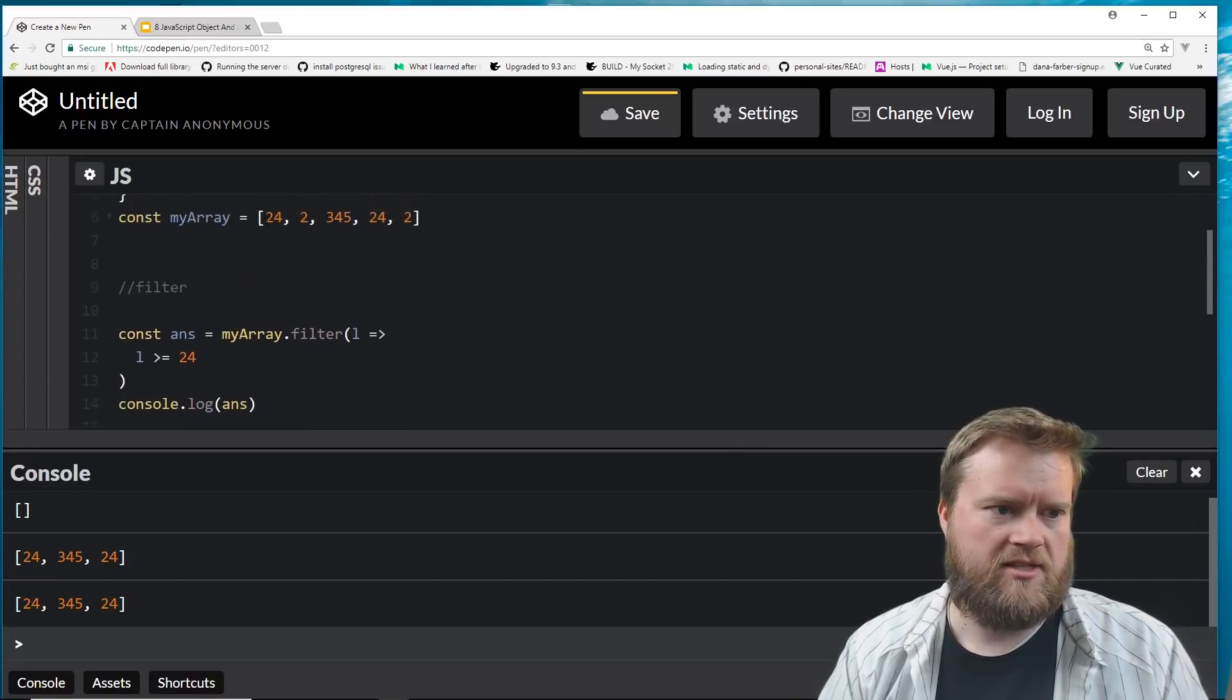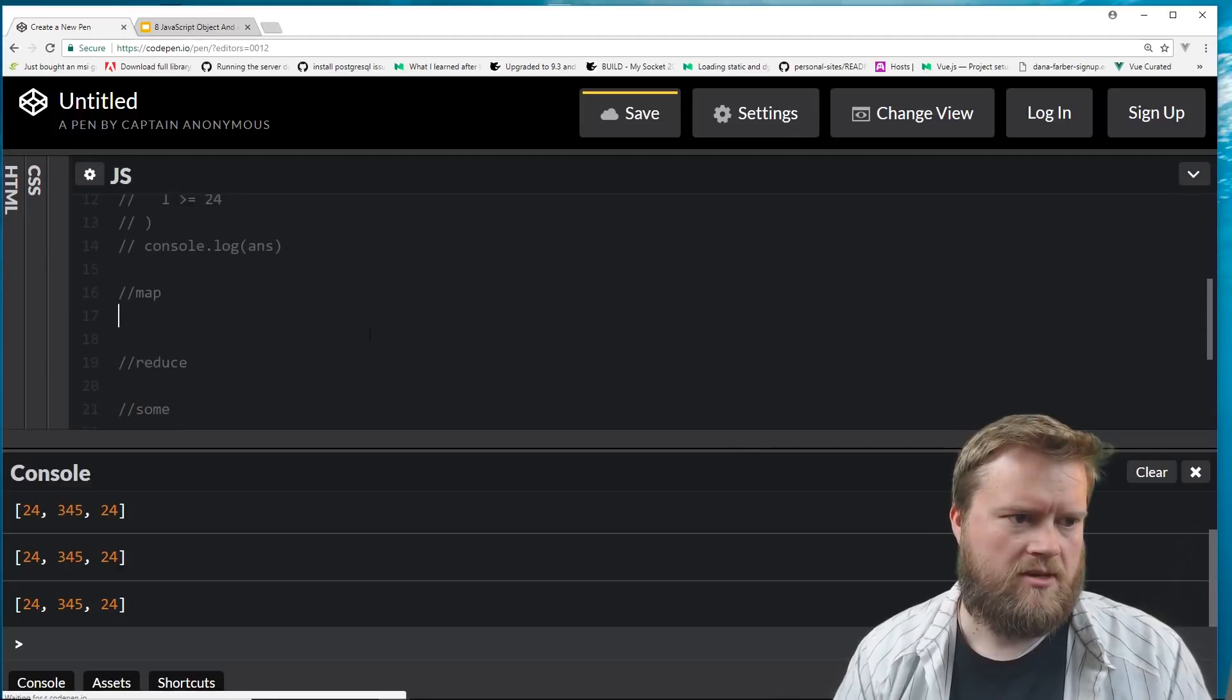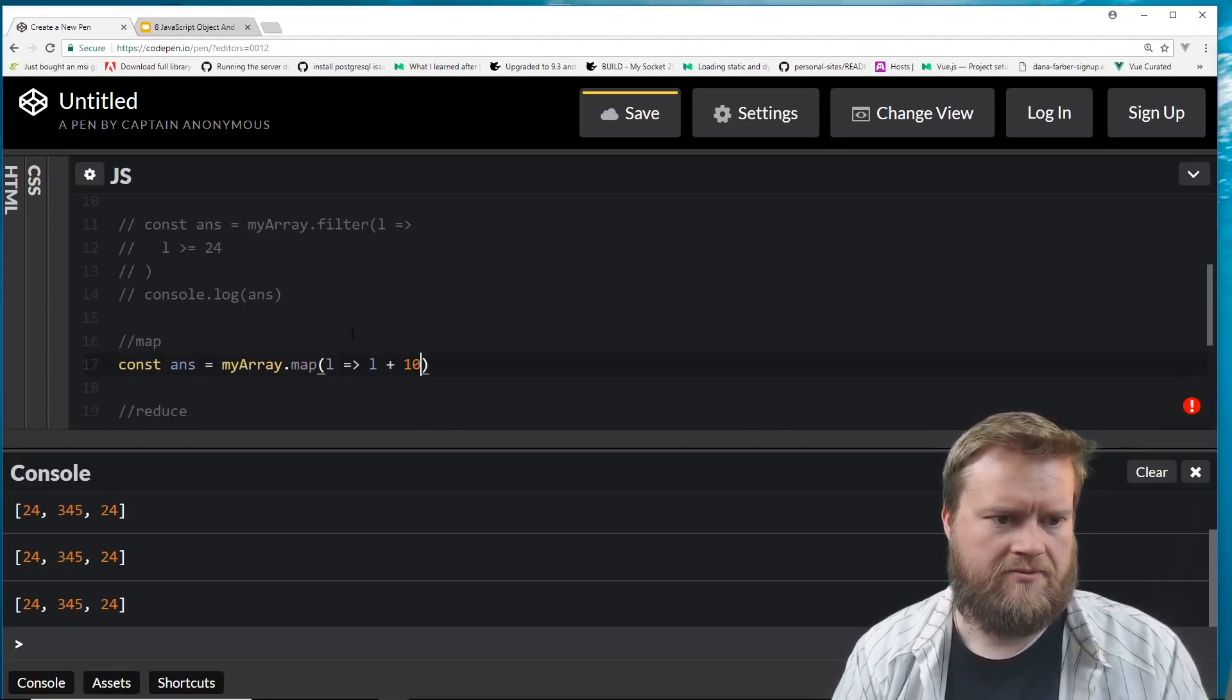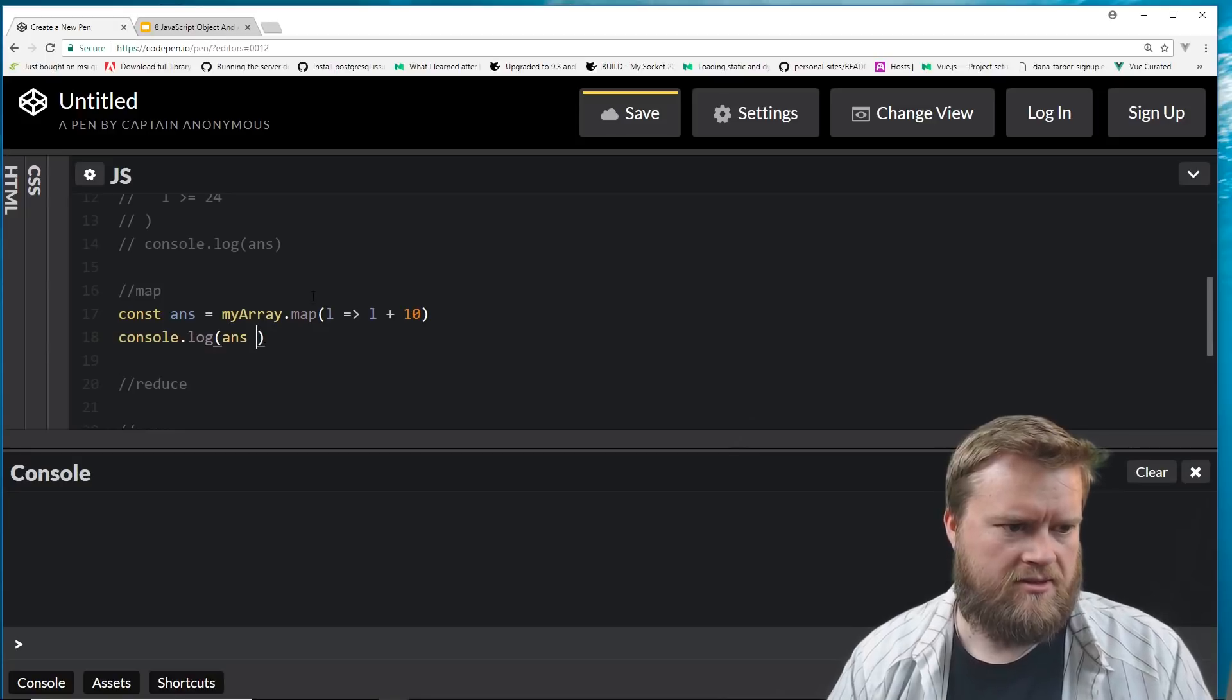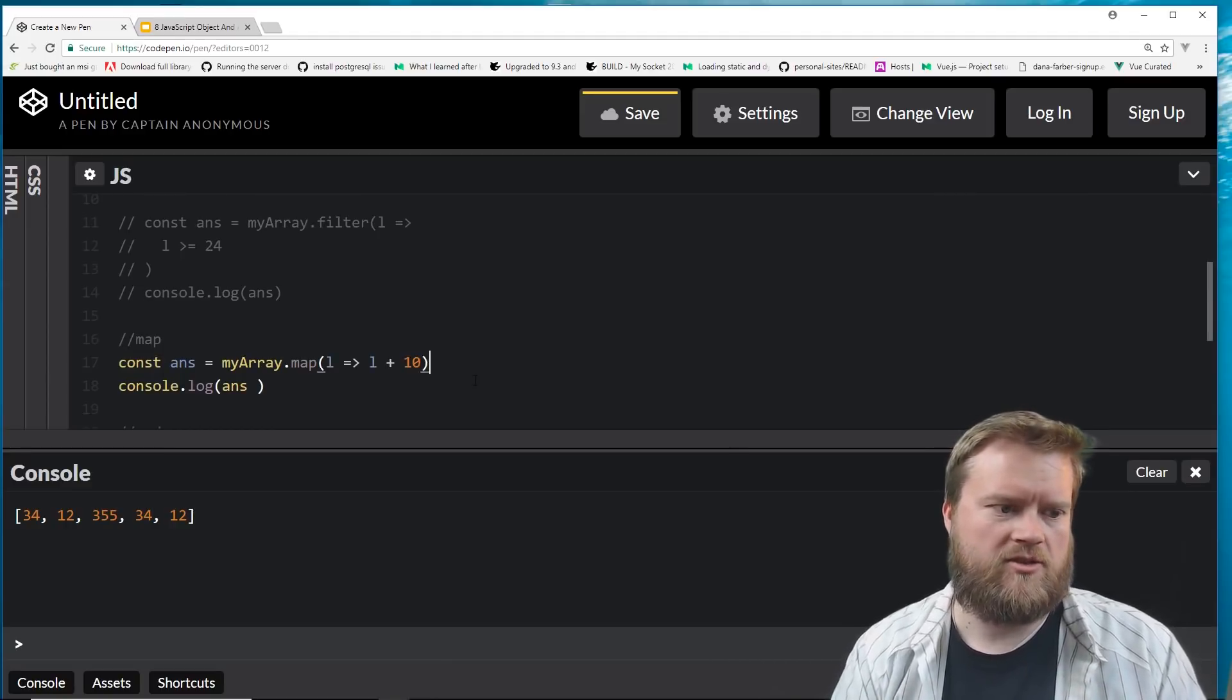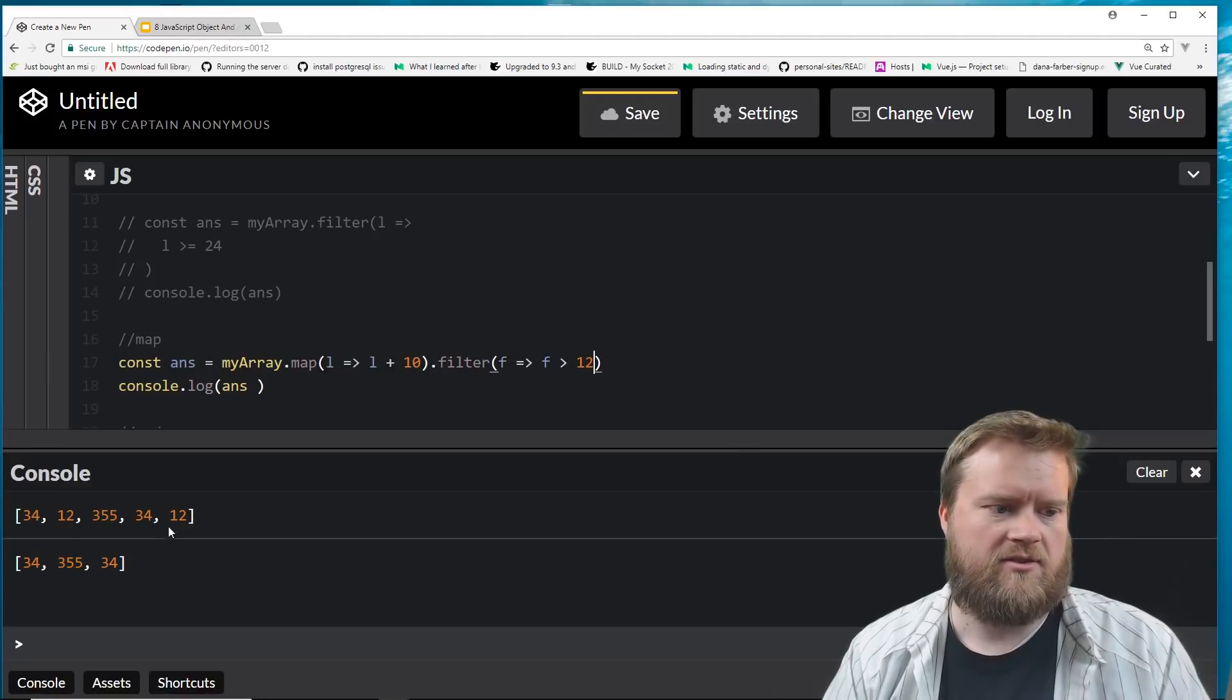Let's take a look at map. So let's say we have this array here, and we want to add 10 to each one of them. So that's pretty easy. I'm going to comment that out. And we'll do const ants myArray.map L. And we'll return L plus 10. And we'll console.log ants, clear it, console.log ants. You can see here, now we got 34, 12, 355, 34, 10. So you can see here, the original array, now everything's added by 10. We could also, obviously if we wanted to, we could combine these two. So I can map this out, and then I could say filter F, F greater than 12. Now you can see only the ones that are bigger than 12. So it eliminates the 12 out there.